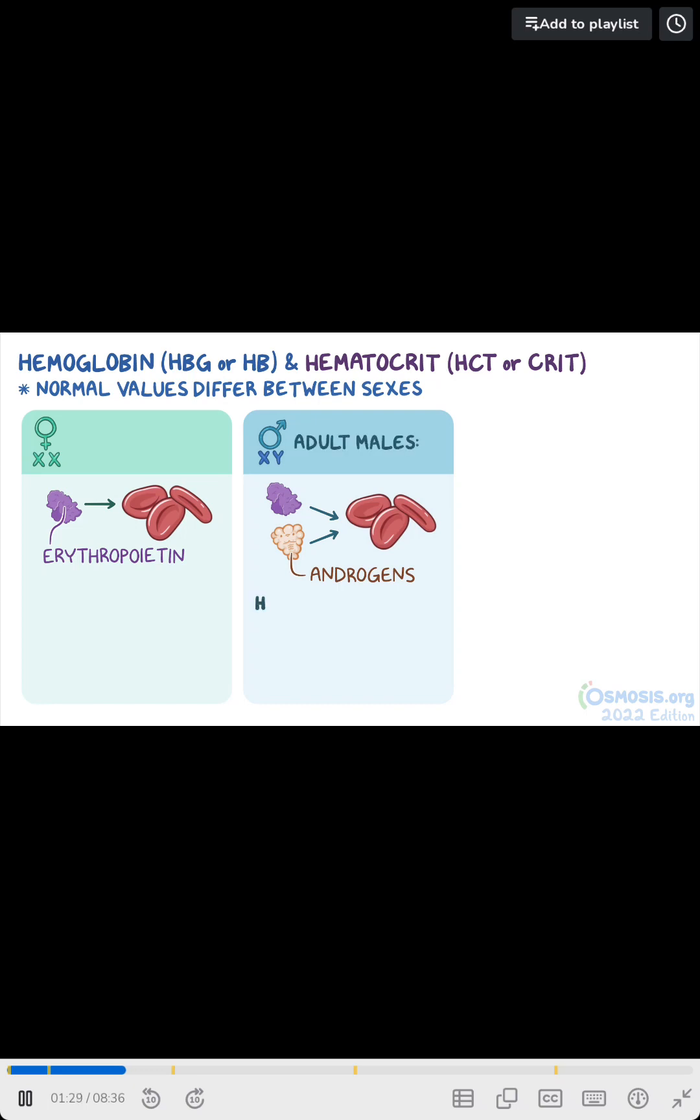In adult males, hemoglobin normally ranges from 14.0 to 18.0 grams per deciliter, while in adult females, it normally ranges from 12.0 to 15.0 grams per deciliter.